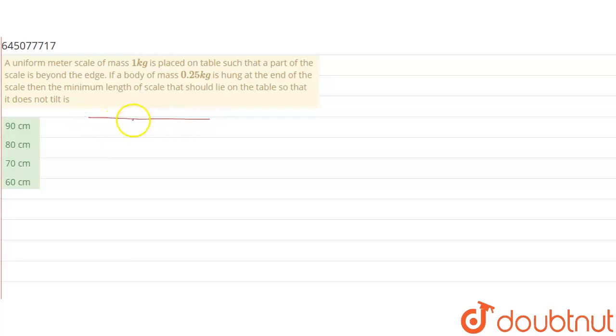This is our table and this is the scale. Let us say that this point is A, this point is C, and this point is B. A uniform meter scale of mass 1 kg is placed on table such that part of scale is beyond the edge. So this is the scale which is beyond the edge, let this be at x distance.